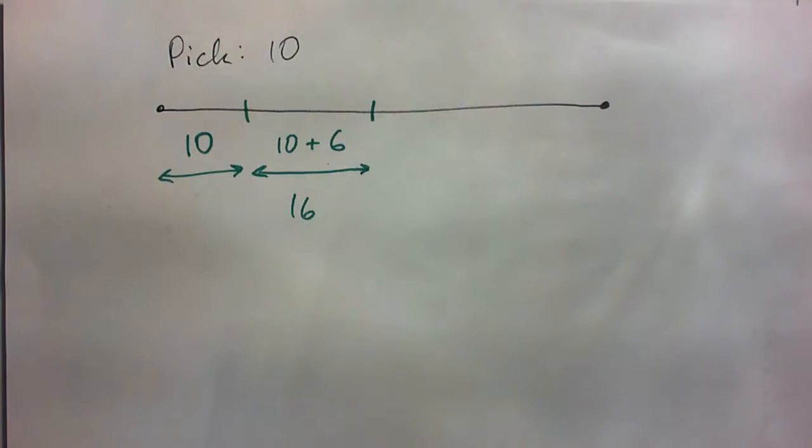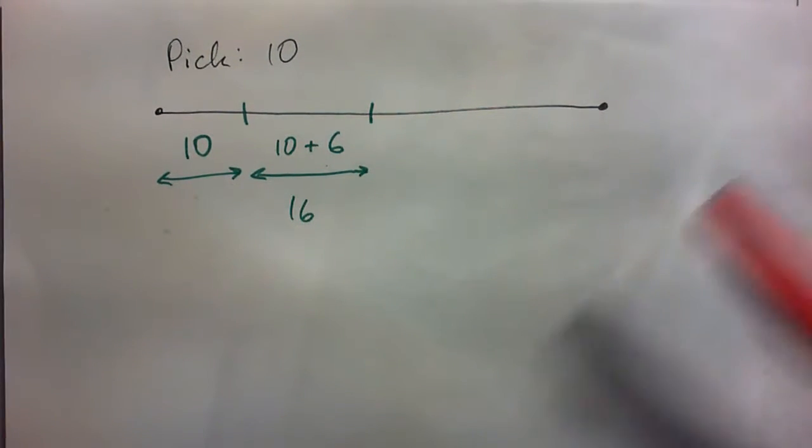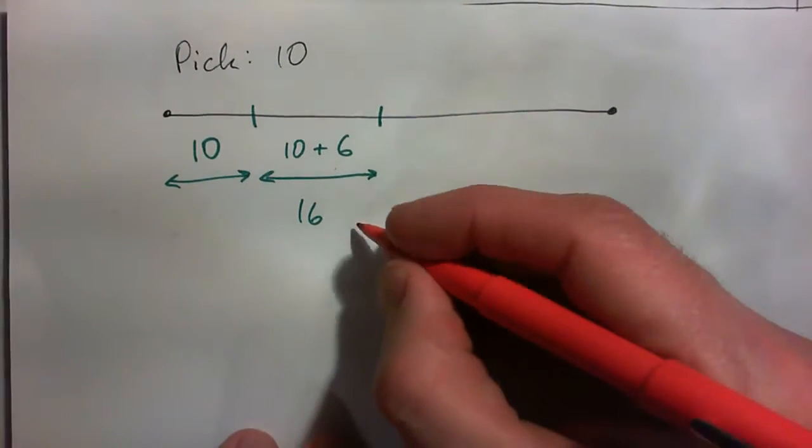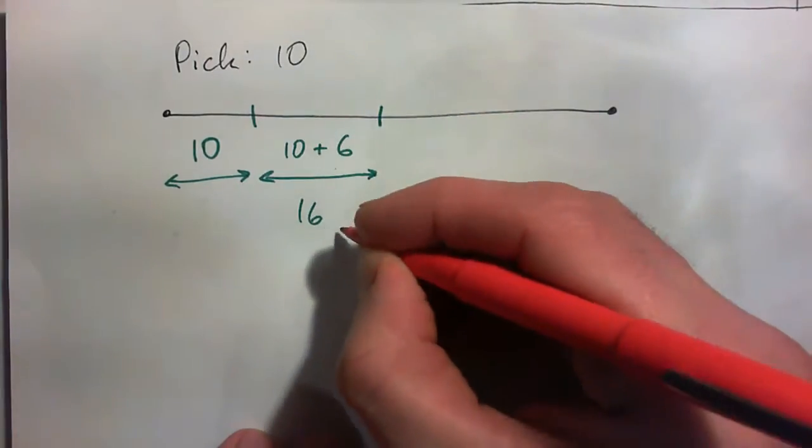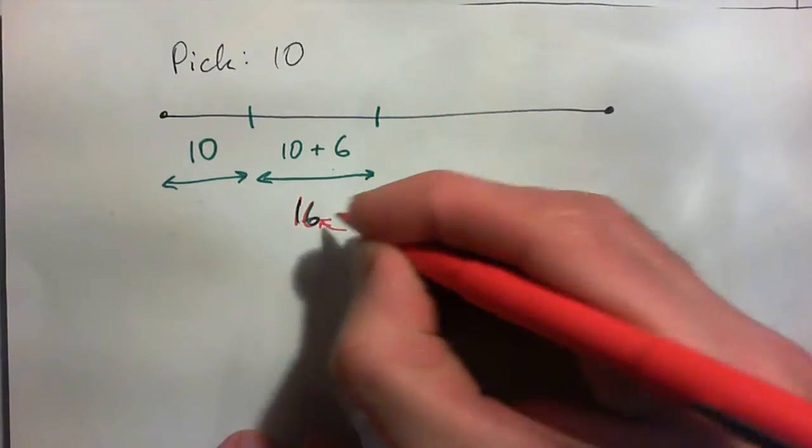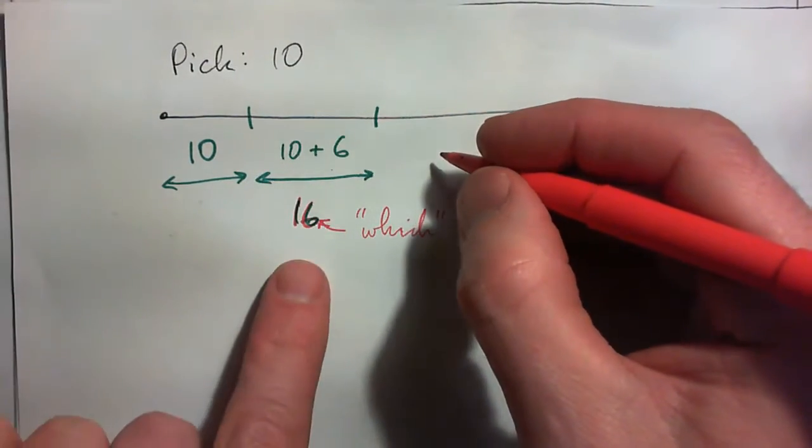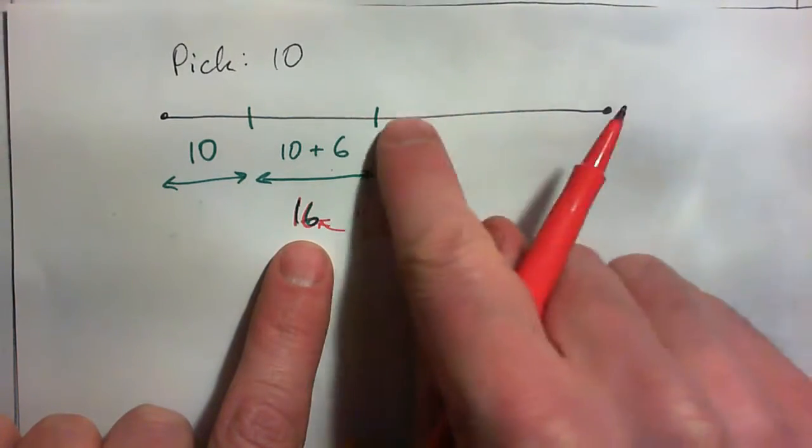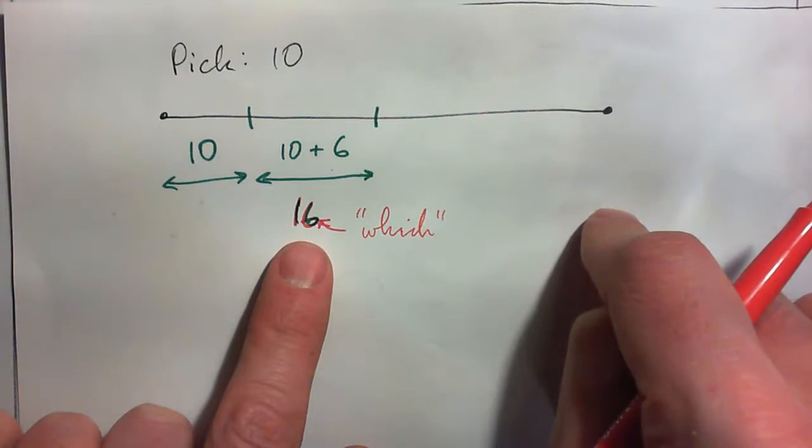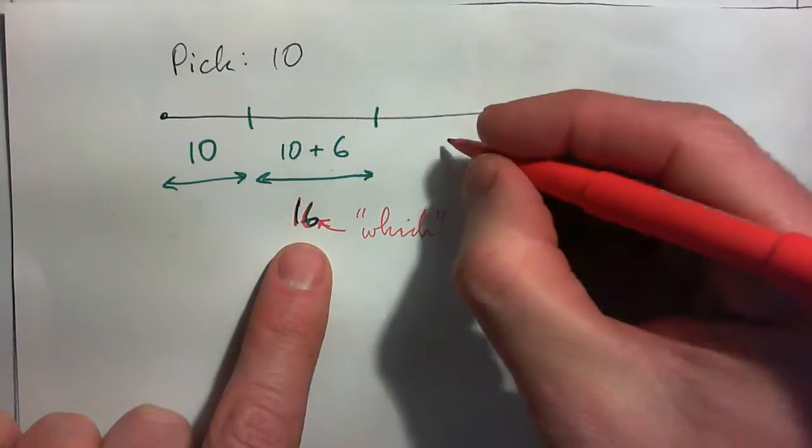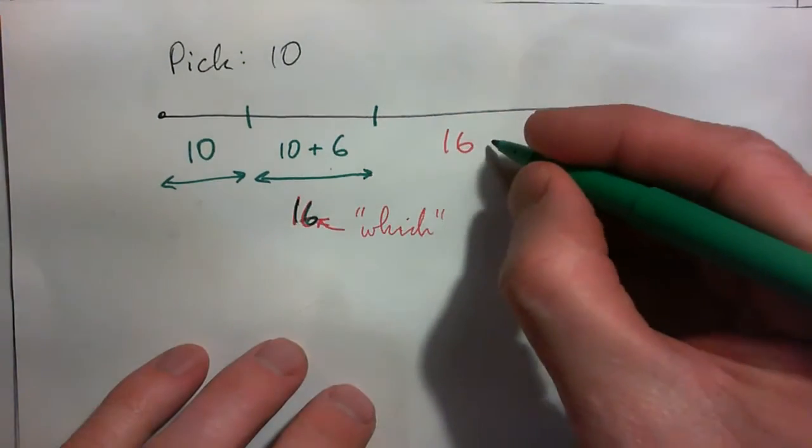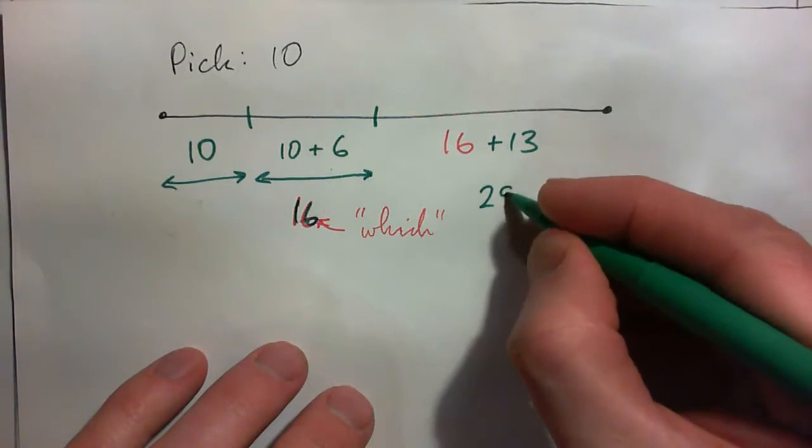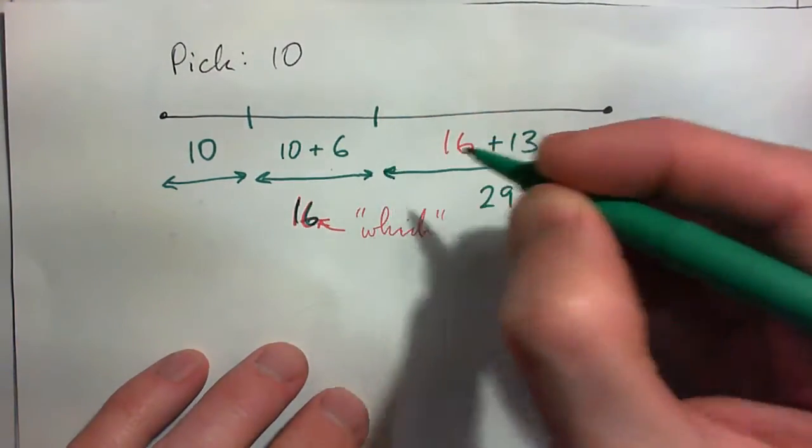And then it says what about the third piece? The shortest piece is 6 shorter than the next piece, which is 13 shorter than the longest. When it says the word which, it's talking about the medium piece. So you take the medium piece, and the medium piece, 16 is 13 shorter than this. So what's the longest piece's length now? The longest is 16 plus 13, which is 29.